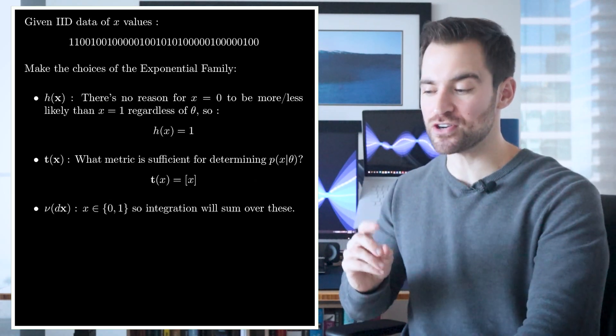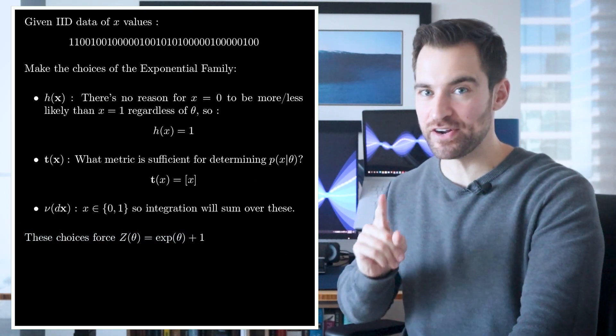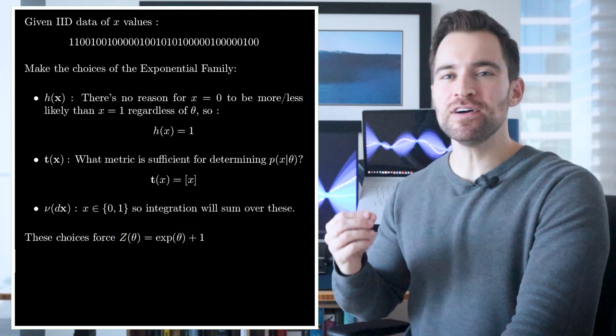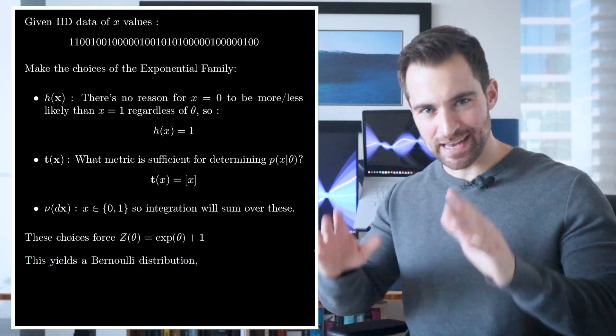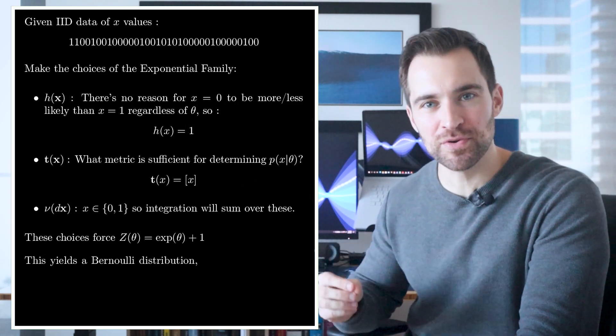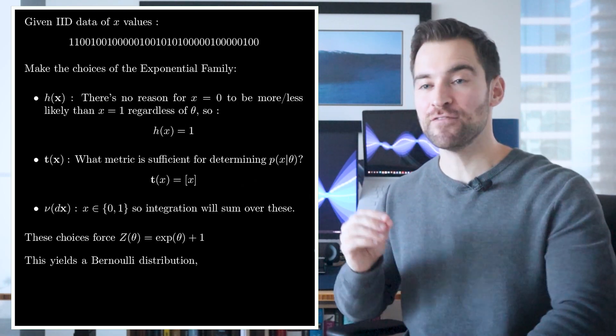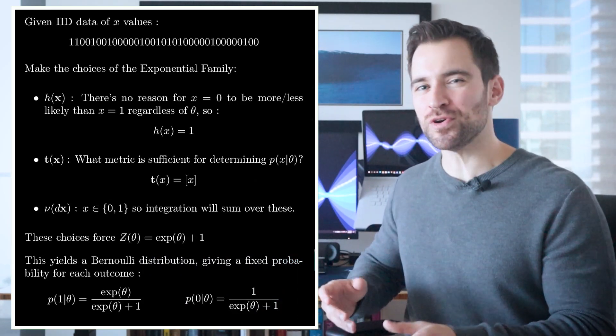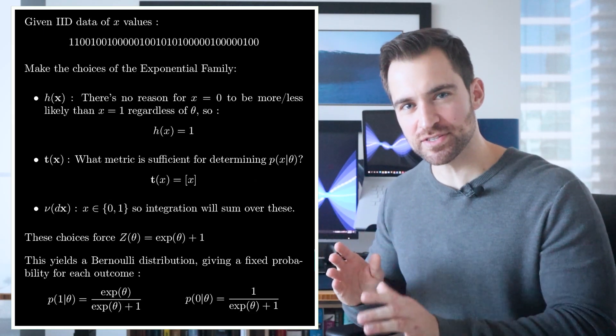That's going to force our normalizer to be something. Specifically, in this case, it'll be e raised to theta plus 1. If you're curious why, pause the video on this. And here's the punchline. If we plug these into the expression of the exponential family, we'll see that it gives the Bernoulli distribution. In other words, fitting this thing is the same thing as fitting a Bernoulli. This is because the exponential family would provide a constant probability determined by theta for each of the two outcomes. Those probabilities are given with these expressions. Pretty cool, right? Within this framework, simple choices have yielded familiar distributions.